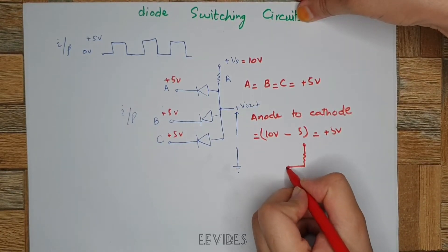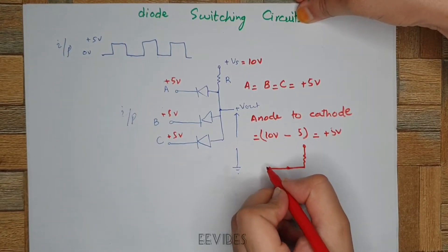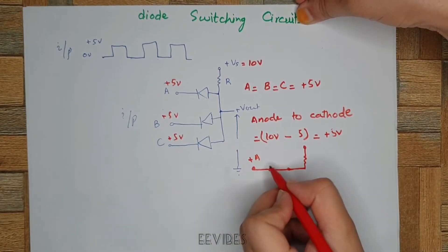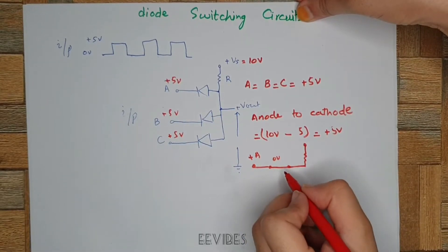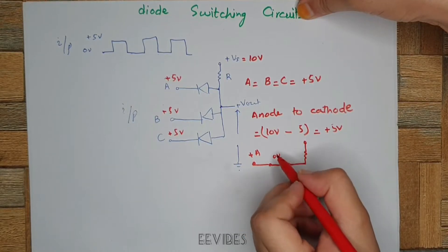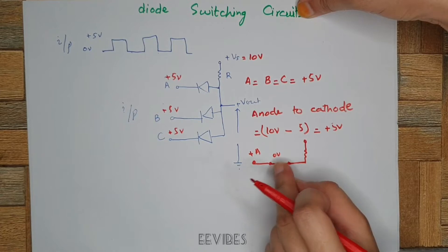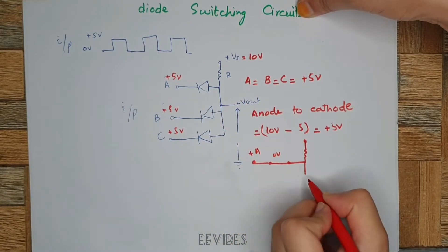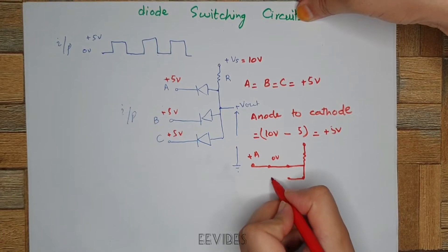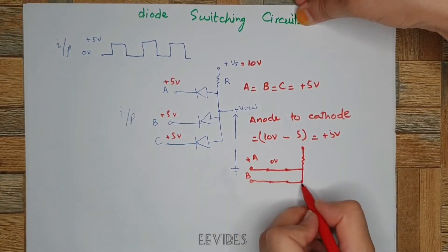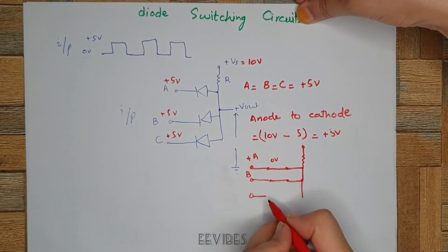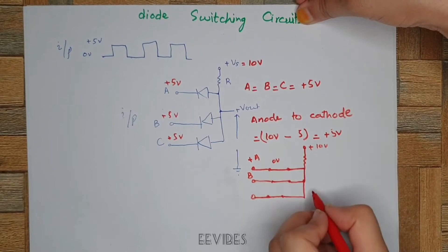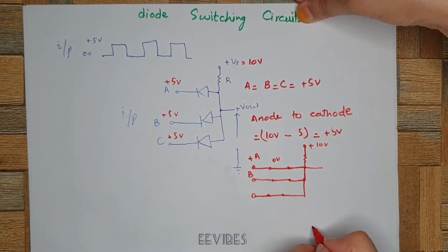We can replace each diode with an ideal diode model, where we assume zero voltage drop across it. Or, if you want to consider it as a practical diode model, you will replace it with a 0.7-volt battery in the case of silicon, or 0.3 volts in the case of germanium. The equivalent circuit can be drawn accordingly. Here the diode is represented as a closed switch, and we measure the output voltage with respect to ground at this point.